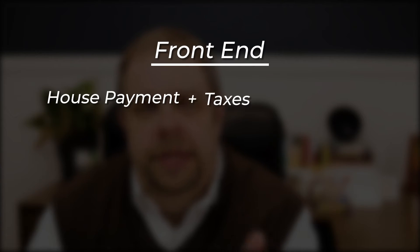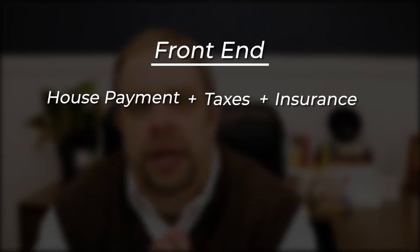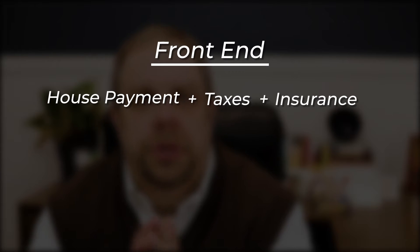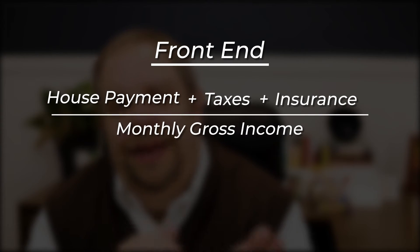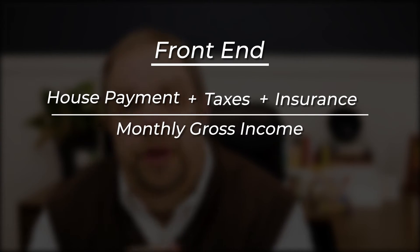There's a front-end and a back-end. Your front-end is your house payment, taxes and insurance, any homeowner association dues — basically your mortgage payment — divided by your monthly gross income.